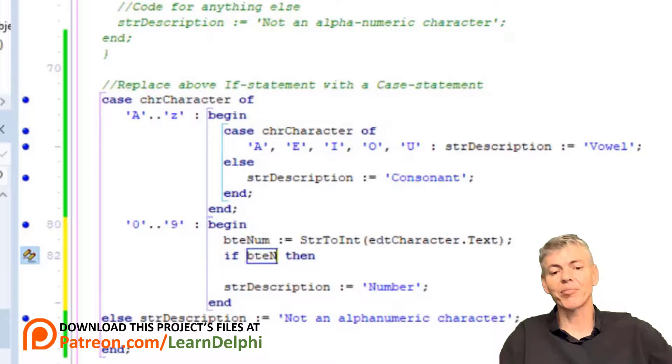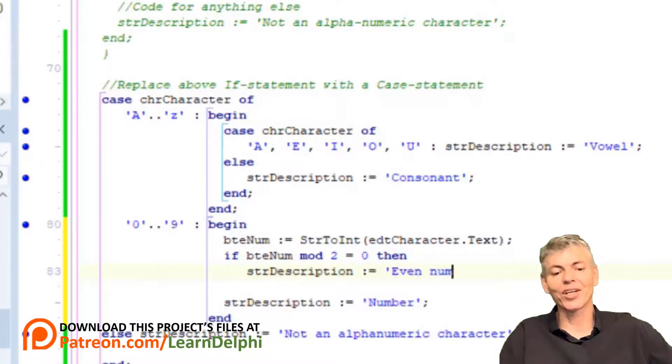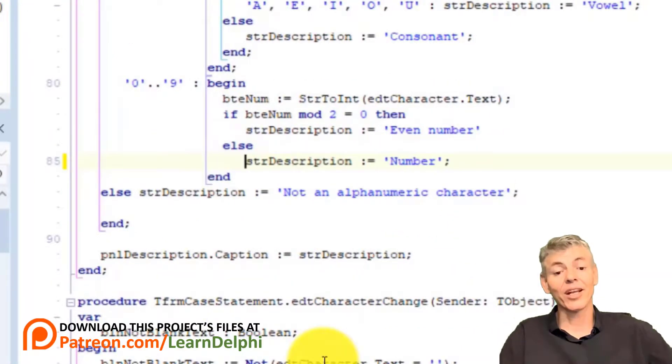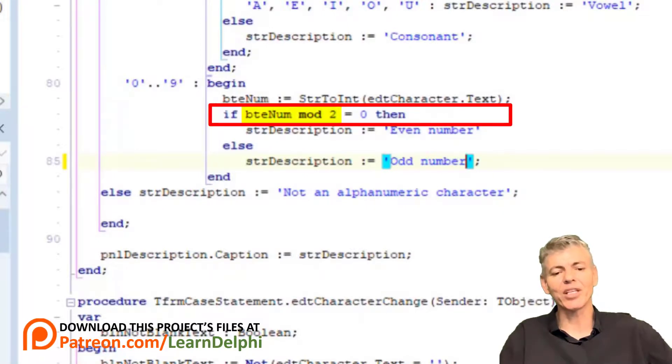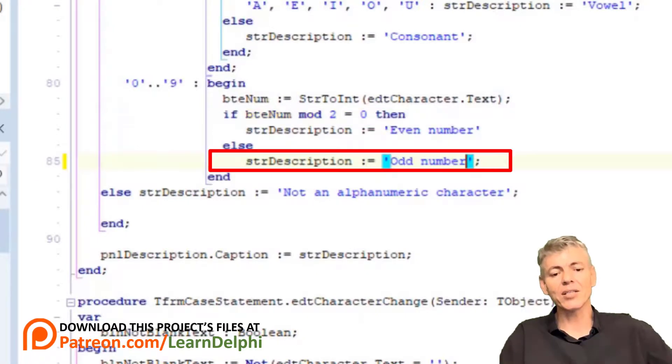Go to the next line and type if btenum mod 2 equals 0 then. And on a new line type strDescription := even number. Don't end the instruction with a semicolon because we will have an else statement. On the next line type else, indent this assignment statement, and then replace the word number with odd number. Here we do the same as last time. We divide the number in btenum by 2 with a mod division operator. And if it doesn't have a remainder, in other words if the remainder is 0, it is an even number. Else, it is an odd number.